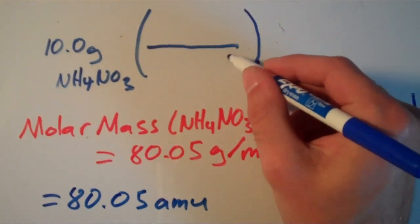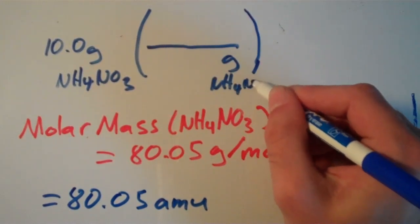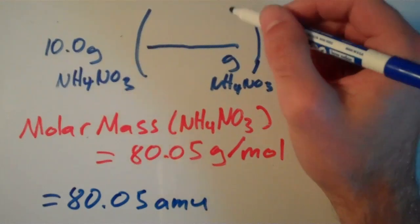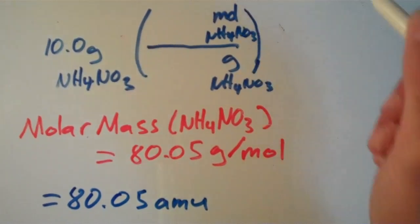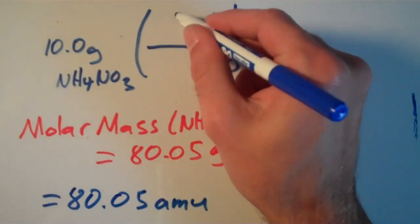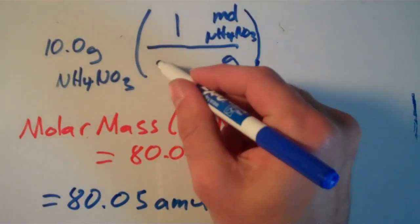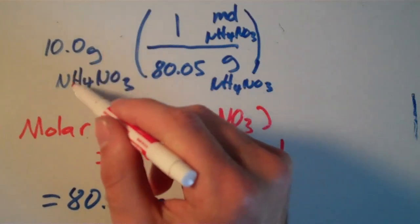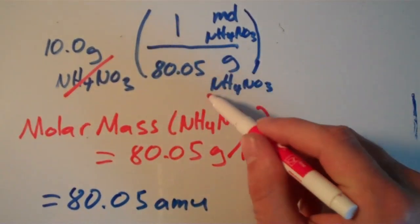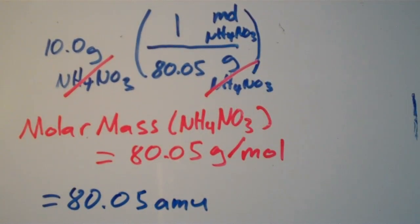I'm going to put grams of ammonium nitrate on the bottom. And I'm going to put the moles of ammonium nitrate on top. And we say that one mole of ammonium nitrate weighs 80.05 grams. And making sure our units cancel, it looks like grams of ammonium nitrate cancels out with grams of ammonium nitrate.